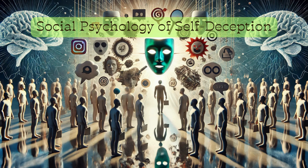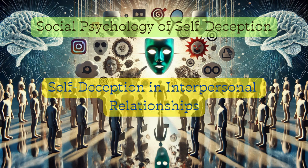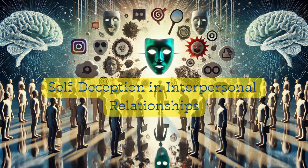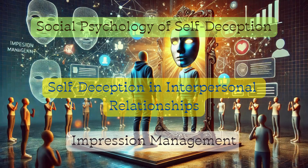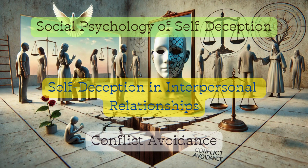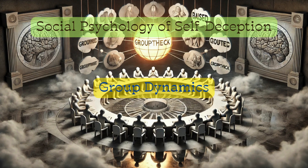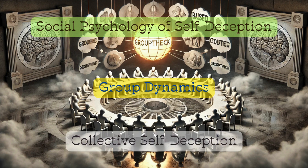In the social psychology of self-deception, impression management leads individuals to deceive themselves to present a favorable image to others, often believing their self-enhancements to be genuine. Self-deception also aids conflict avoidance by ignoring or rationalizing negative aspects of relationships. Groups can collectively deceive themselves, leading to phenomena like groupthink or shared illusions.